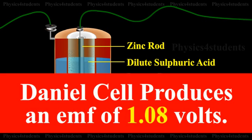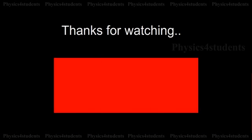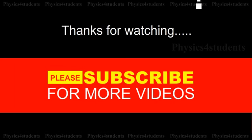Daniel cell produces an EMF of 1.08 volts.